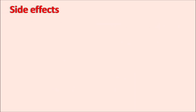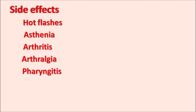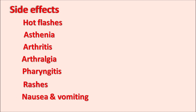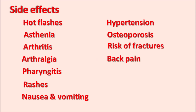What are the side effects? Important side effects include hot flashes — because this drug inhibits estrogen levels — asthenia (lack of energy), arthritis (inflammation of joints), arthralgia (joint pains), pharyngitis, skin rashes, nausea and vomiting, hypertension (elevation of blood pressure), osteoporosis and risk of fractures due to reduced bone mineral density, and back pain.